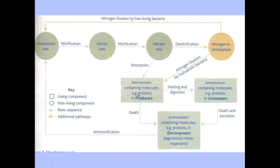Last video we finished off by looking at ammonium ions, which have the formula NH4. There are a number of processes shown at the top of the diagram, showing ammonium ions being converted into different types of chemicals. These arrows indicate the different types of processes involved, and we are going to look at those now.